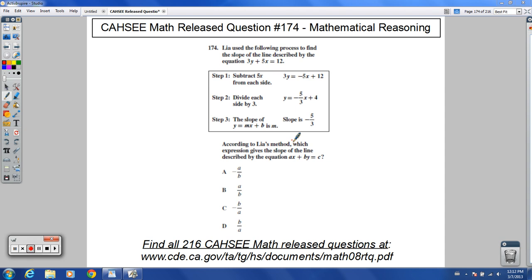So according to Leah's method, which expression gives the slope of the line described by the equation ax plus by equals c? Ha ha, a little tricky right here. They're little tricksters. Ax plus by up here, though, they've got the y first and the b second.